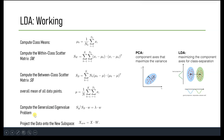We compute the generalized eigenvalue problem: SW⁻¹ × SB × W = λ × W, where W is the eigenvector and λ (alpha) is the corresponding eigenvalue. We then sort eigenvalues in descending order and choose the K eigenvectors corresponding to the K largest eigenvalues, forming the transformation matrix W by stacking selected eigenvectors as columns. We then project the original dataset X into the new subspace: X_new = X × W.